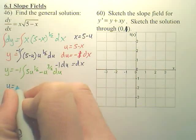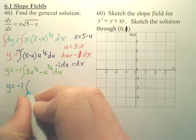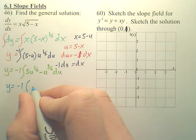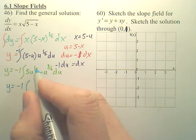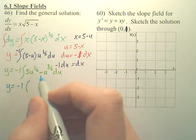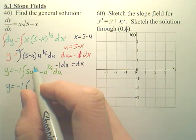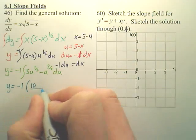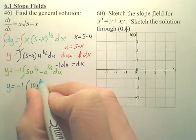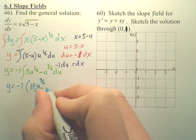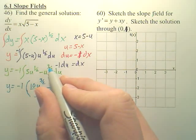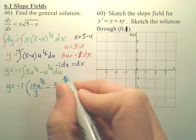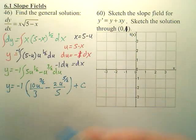So I now have y equals negative 1. And the integral of this would be, the 5 stays out, you add 1 which would be 3 over 2, divide by that. So that would be 10 over 3, u to the 3 over 2, minus, this one you add 1, it would be 5 over 2. So it would be 2 over 5, u to the 5 over 2, plus c.